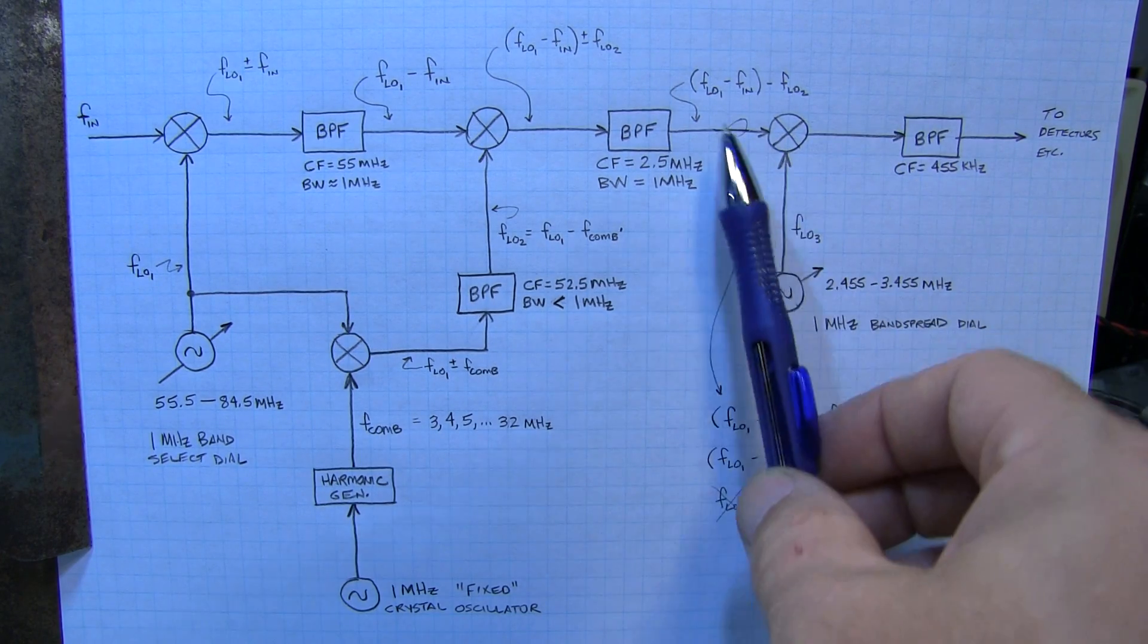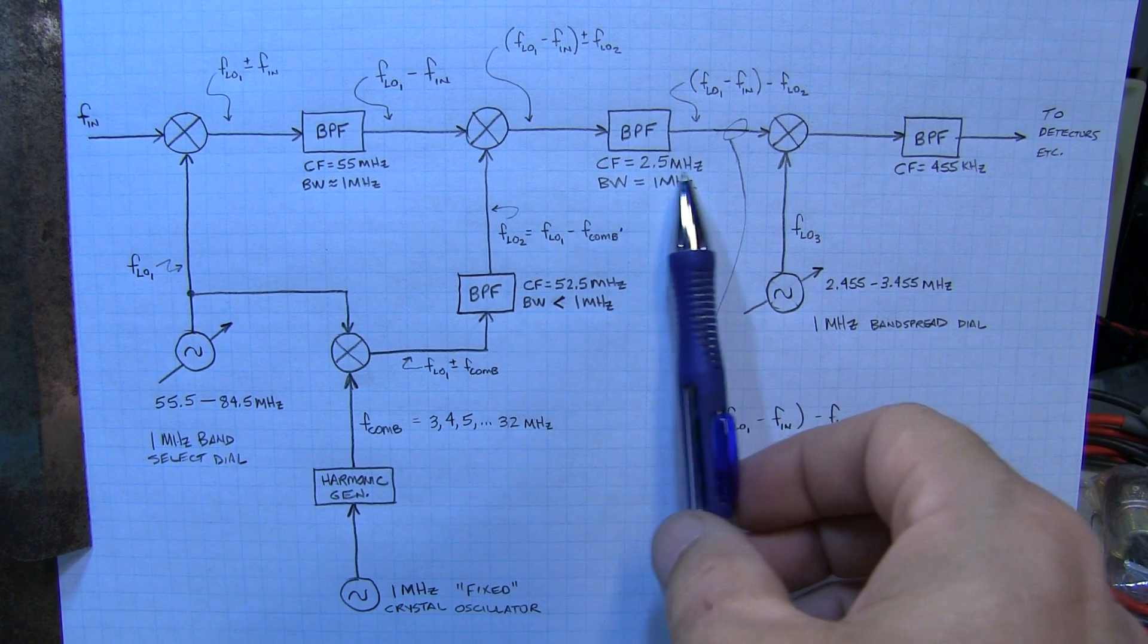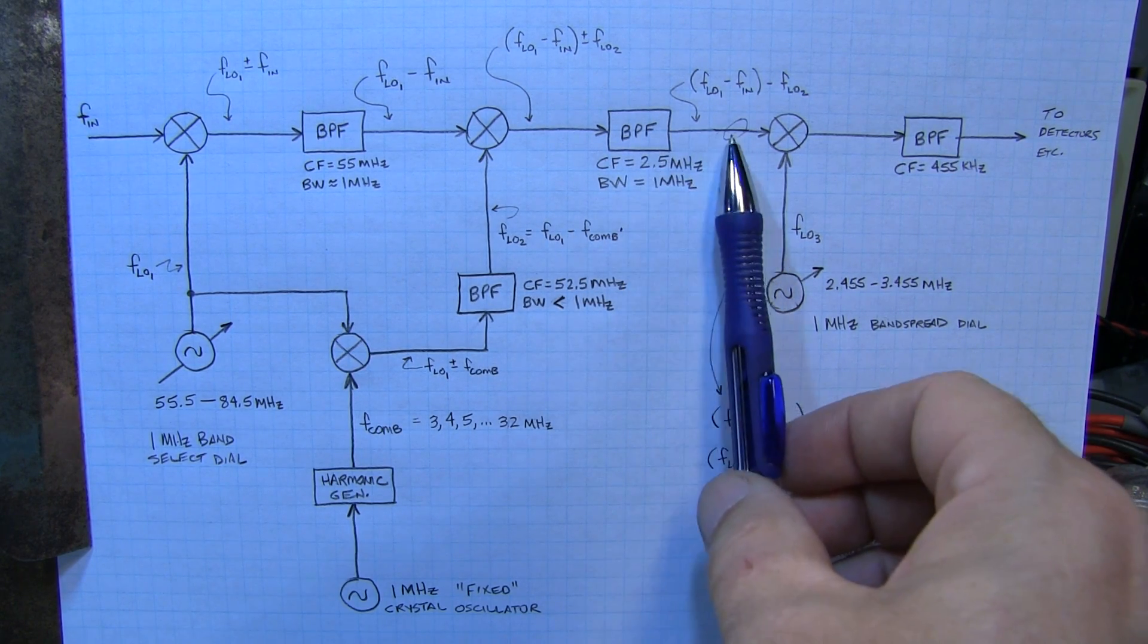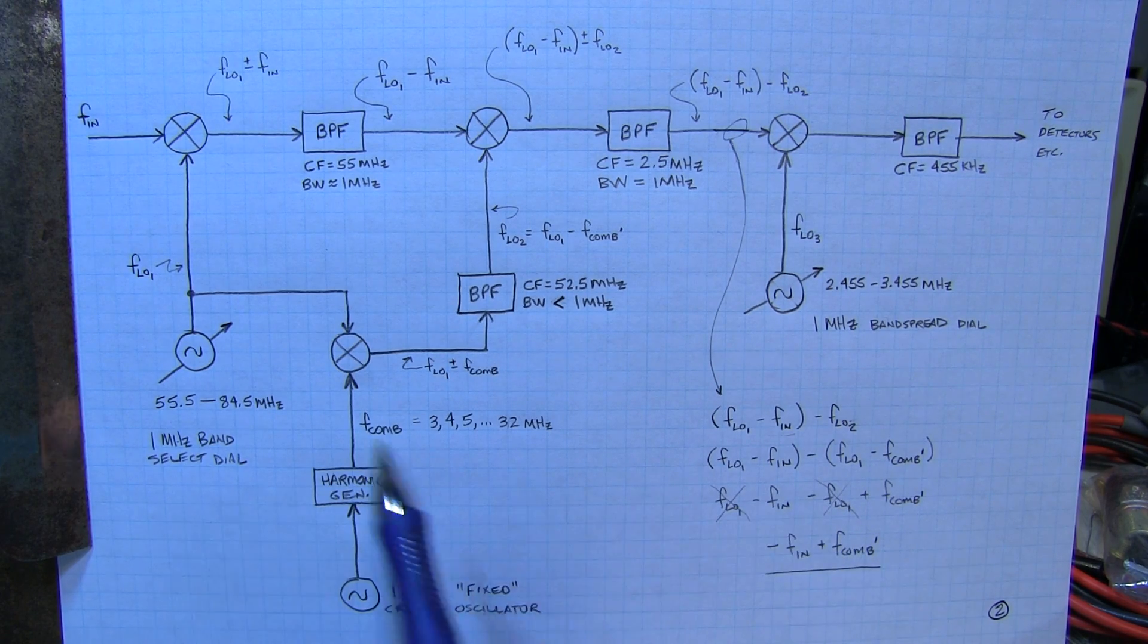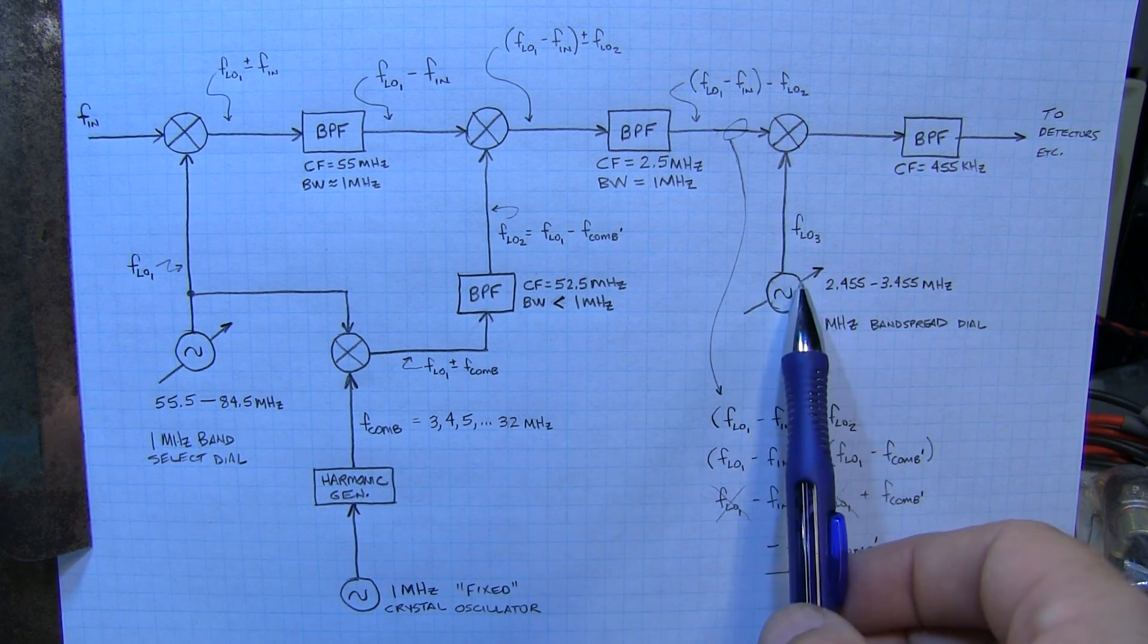So what we're left with after at this point here is a 1 MHz bandwidth selected portion of the spectrum that is essentially free of any drift from that local oscillator. So then we just mix it a third time here now.